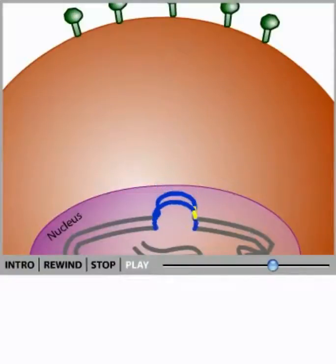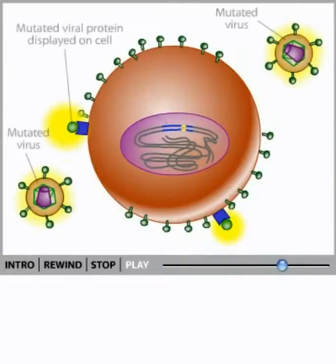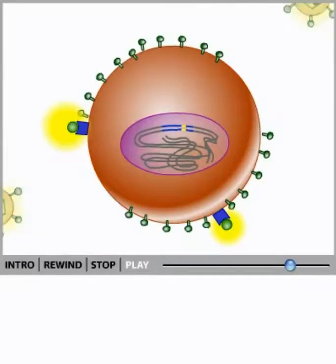The genetic material of the virus enters the nucleus and incorporates into the host cell's chromosomes. Here, the genetic code of the virus is used for the production of new viruses by the host cell. Each new virus produced carries the mutations in its genetic material, and these mutations result in proteins that have changes in amino acid sequence.